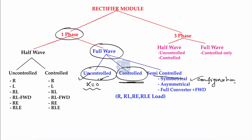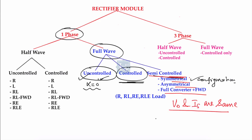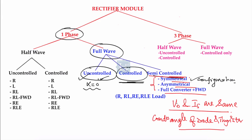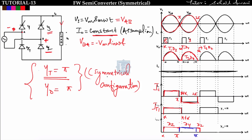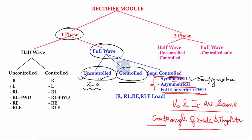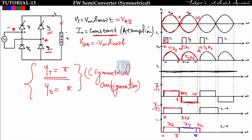Since the conduction angle of the diode and conduction angle of the thyristor are both equal to pi, this configuration is called symmetrical. In all three semi-controlled configurations — symmetrical, asymmetrical, and full converter with freewheeling diode — the output voltage waveform and source current waveform are the same; only the conduction angles of diodes and thyristors differ.